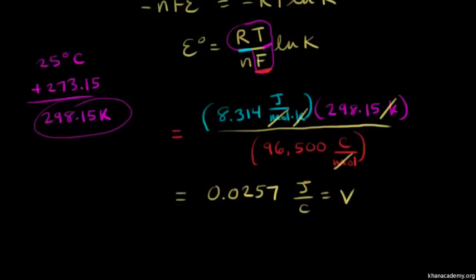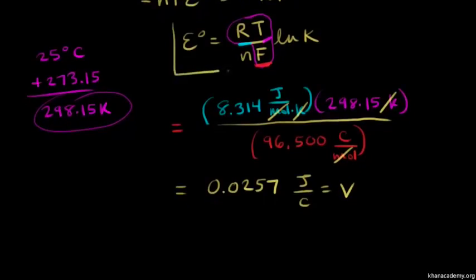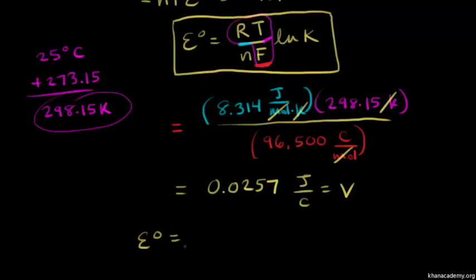So we can rewrite our equation. We're gonna plug in for RT over F now. The standard cell potential, E zero, is equal to 0.0257 volts over N. N is the number of moles that are transferred in your redox reaction. And this is times the natural log of K, our equilibrium constant.